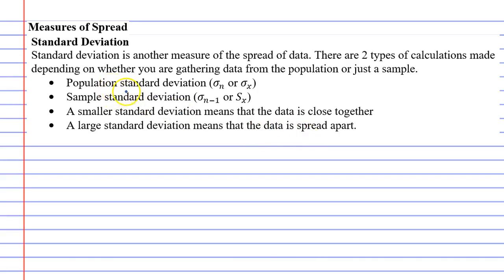We actually have two different types of standard deviation we calculate. We've got population standard deviation and sample standard deviation. Just a quick reminder, population means that everyone is involved, and a sample means only a portion of the population was involved in the gathering of the data.